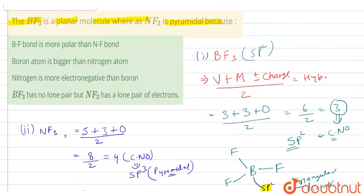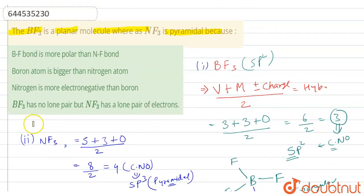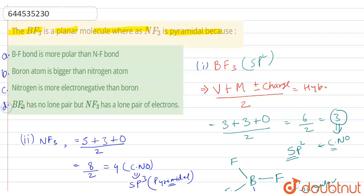Looking at the options: Option A says BF bond is more polar than NF bond — not the correct reason. Option B says boron atom is bigger than nitrogen — not correct. Option C says nitrogen is more electronegative than boron — not the correct reason. Option D says BF3 has no lone pair but NF3 has a lone pair of electrons — this is the correct answer.